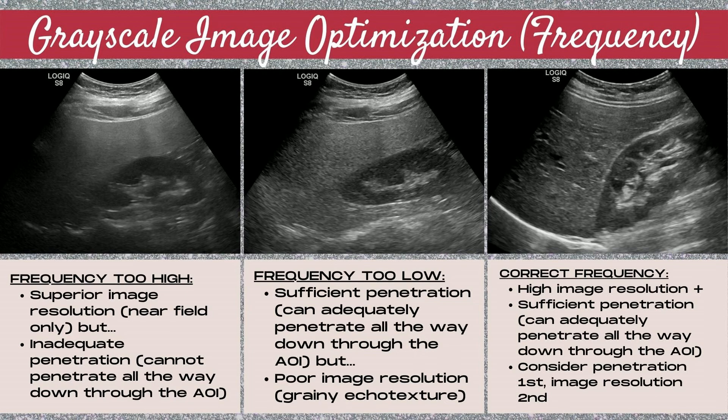The third image is the correct frequency. There's high image resolution and also sufficient penetration — you can adequately penetrate all the way through the area of interest. So when setting the frequency control, always consider the level of penetration first. Set the frequency lower and lower until you can see the bottom of the area of interest, then you ensure you're using the highest frequency possible, which gives you the highest image resolution while still penetrating all the way through your area of interest.